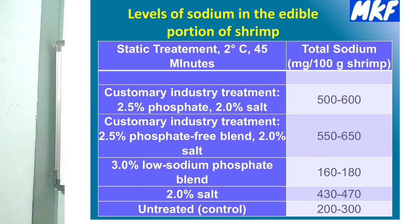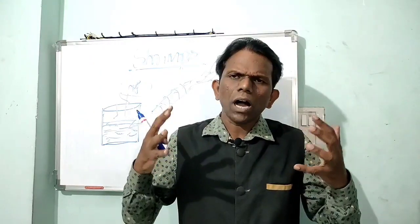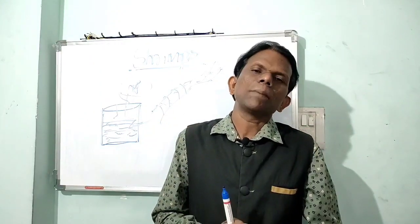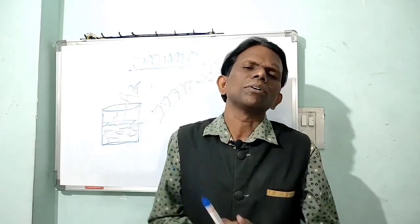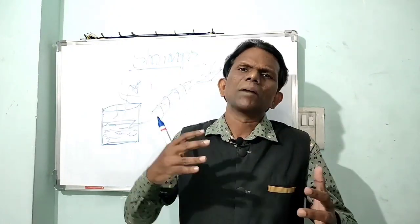When you treat shrimp with phosphates or non-phosphates, the sodium levels further increase by around 200 to 300 mg. After soak-out, the shrimp flesh will contain 500 to 600 mg of sodium per 100 grams — that is the optimum level. Above that, the taste becomes too salty and is not advisable.